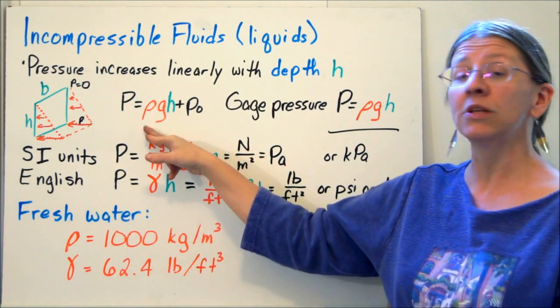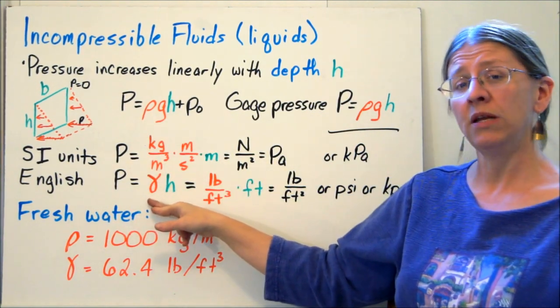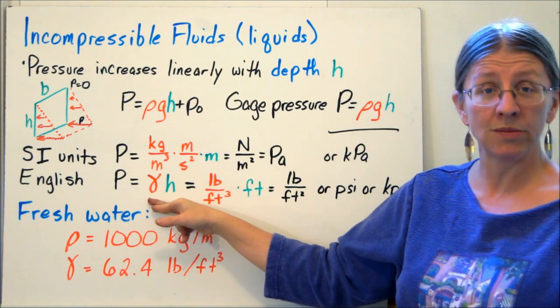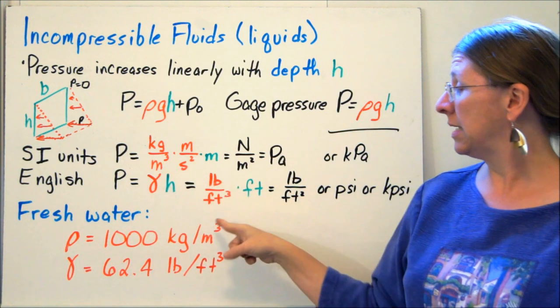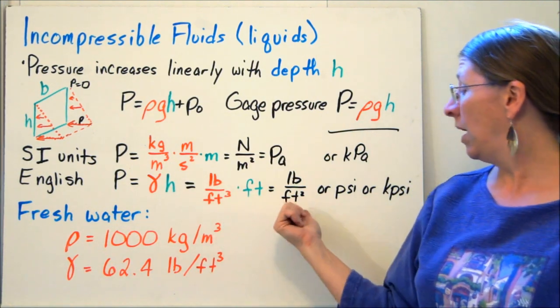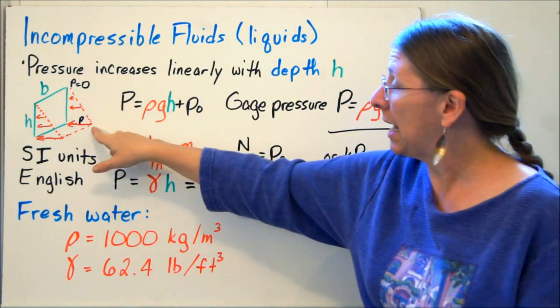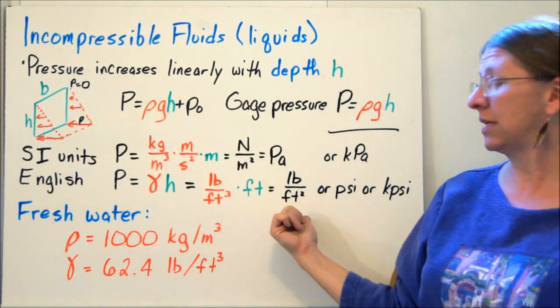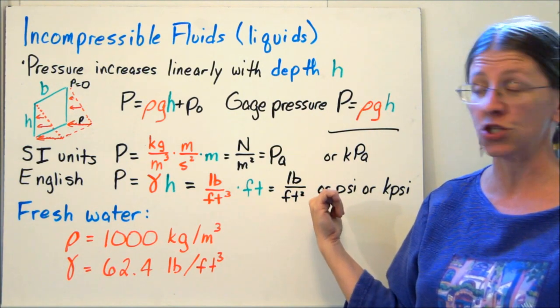In English units, we don't generally use ρ's because we don't like slugs. So we'll use specific gravity. Gamma is equal to ρ times g. So P is γh. In this case, gamma is given to you in units of pounds per feet cubed. So if you multiply by h, you now have pressure. Here at the bottom, the pressure is in pounds per feet squared, or psi, or kpsi, which is a thousand pounds per square inch. That's the line at the bottom of the load intensity diagram.